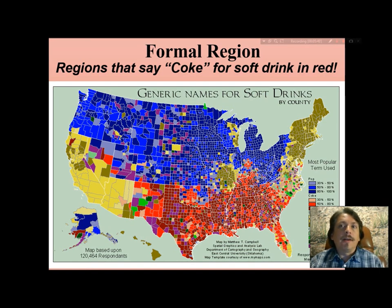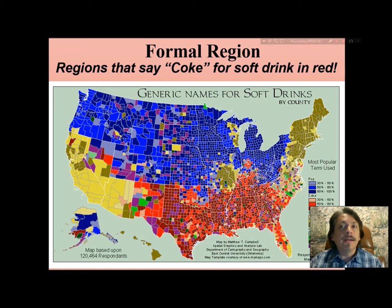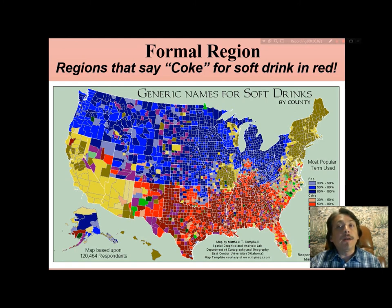In other parts of the country, shown in blue, 'pop' is the most popular word for carbonated refreshment. Areas depicted in beige — such as New England, part of Wisconsin, parts of Missouri and Illinois, and a region stretching from Arizona to California — favor the word 'soda.' There are also variations like soda pop. A green color on the map depicts areas that refer to carbonated refreshment by some other name, though it's not common.